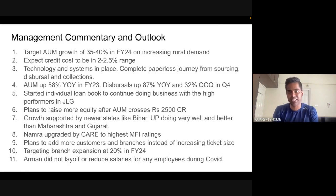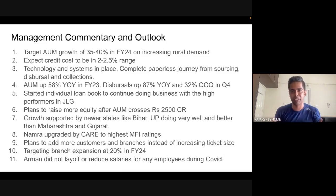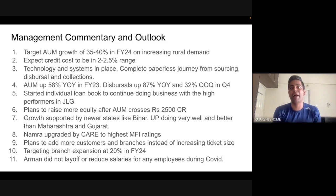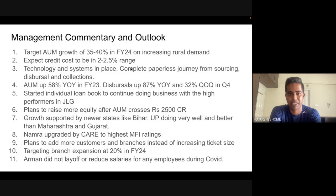Interest rates have stopped rising, so Arman's cost of borrowing will also start coming down. If cost of borrowing comes down, NIMs can expand further, which boosts ROE and PAT/EPS growth. The AUM target of 35 to 40 percent is amazing commentary from management. The credit cost is expected to be around 2 to 2.5 percent.